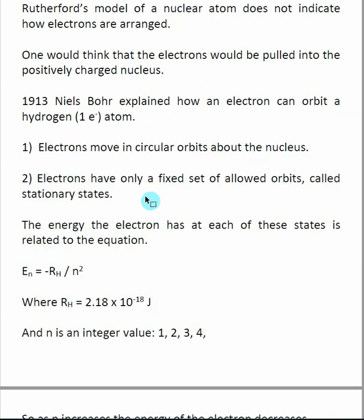Electrons tend to move in fixed sets of orbits called stationary states. This is related to the fact that an electron has a wavelength. Because it has a wavelength, there are only specific distances from the nucleus where the electron can move without the wavelengths interfering with each other. So because electrons have wavelengths, they have fixed orbits — fixed distances that they can be away from the nucleus.